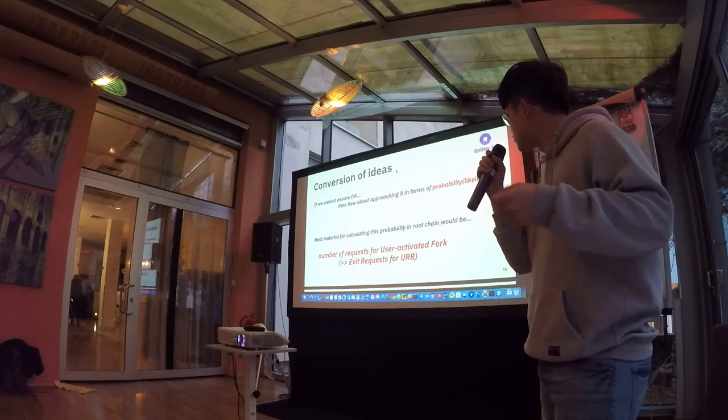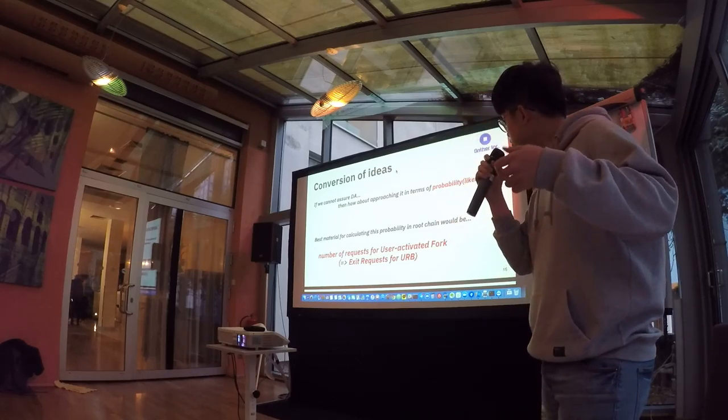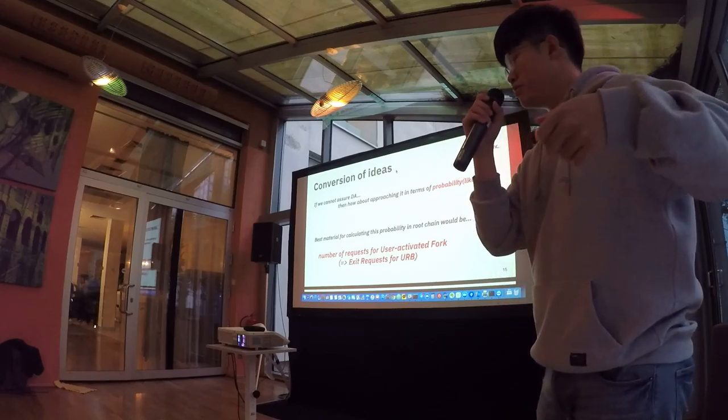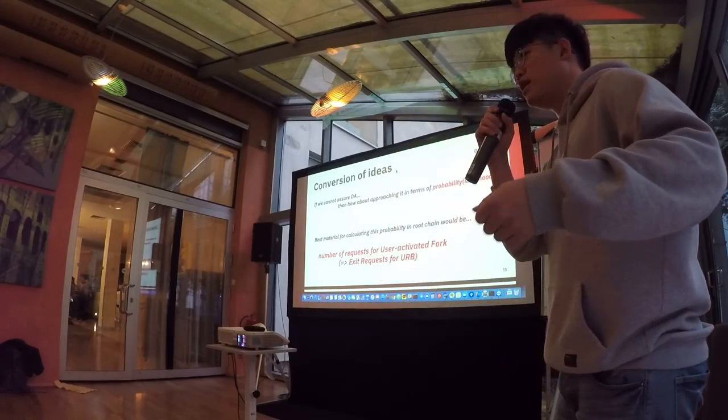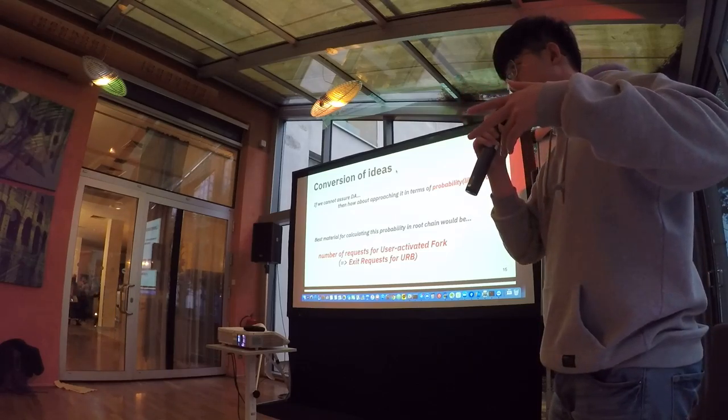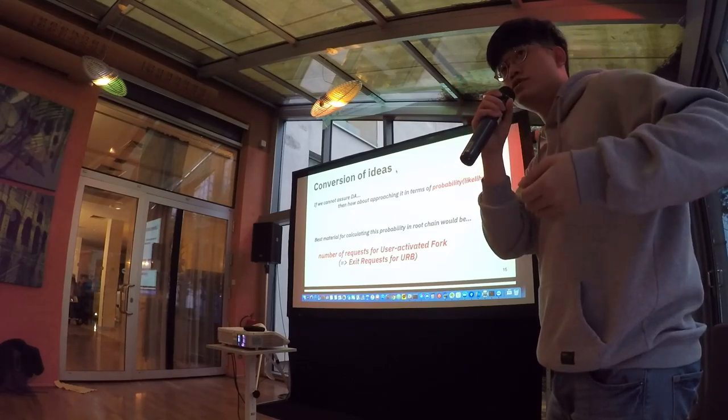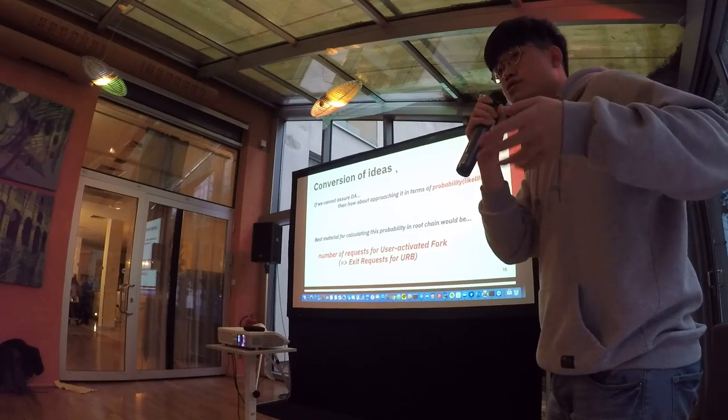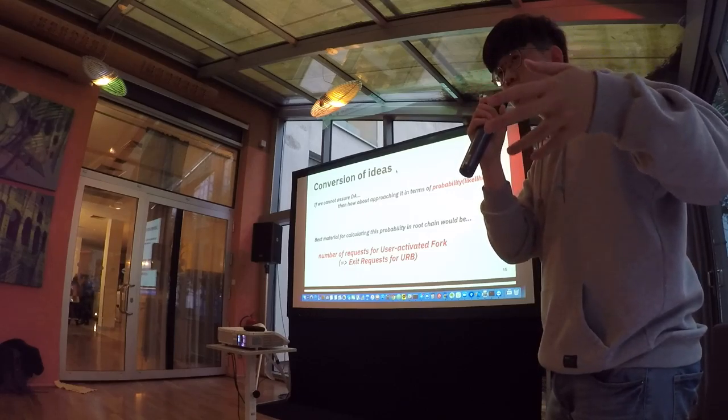We thought that the best material for calculating this probability would be in Luchin would be the number of requests for user activated fork. More simply, it's just the majority rules.